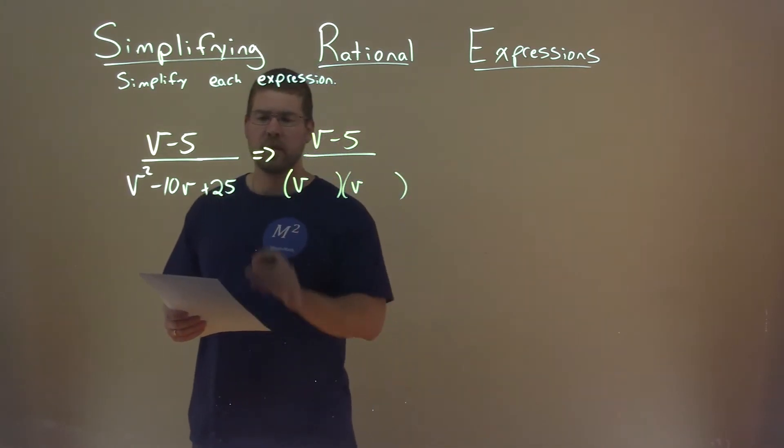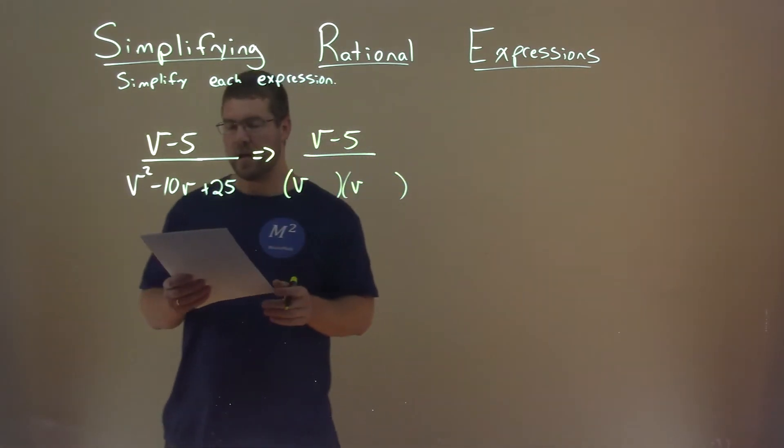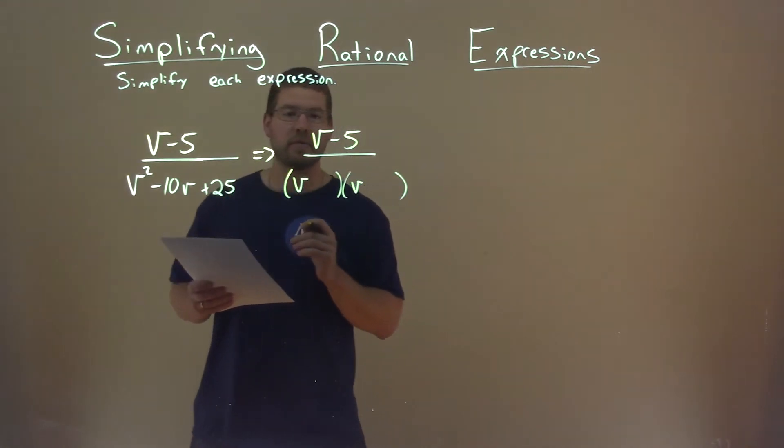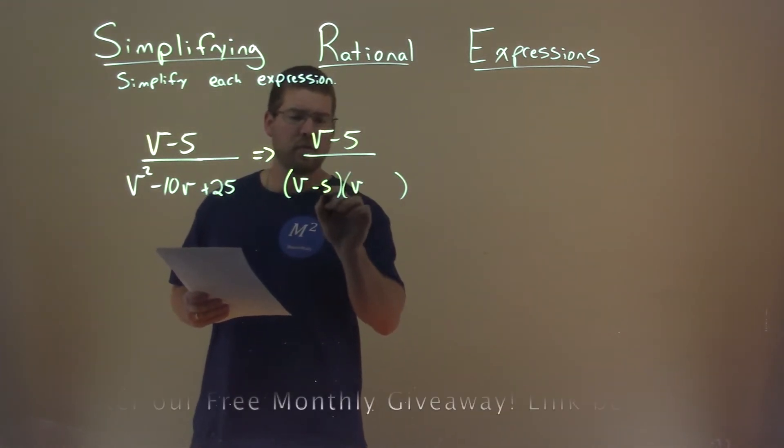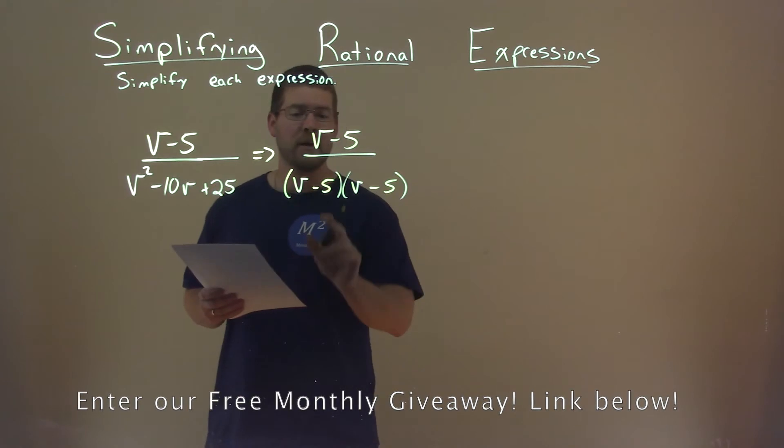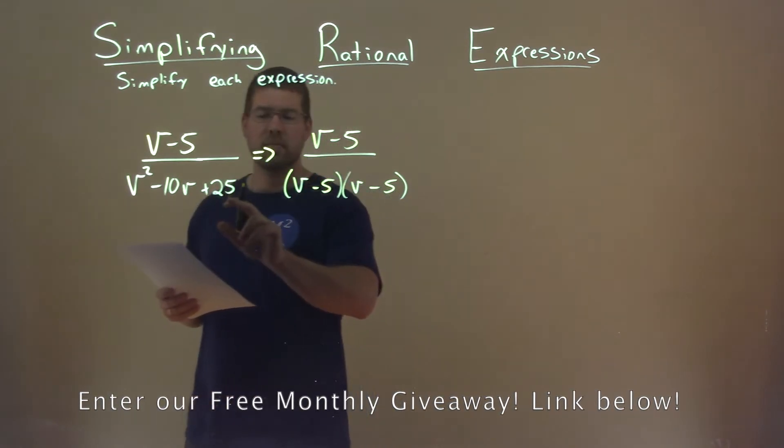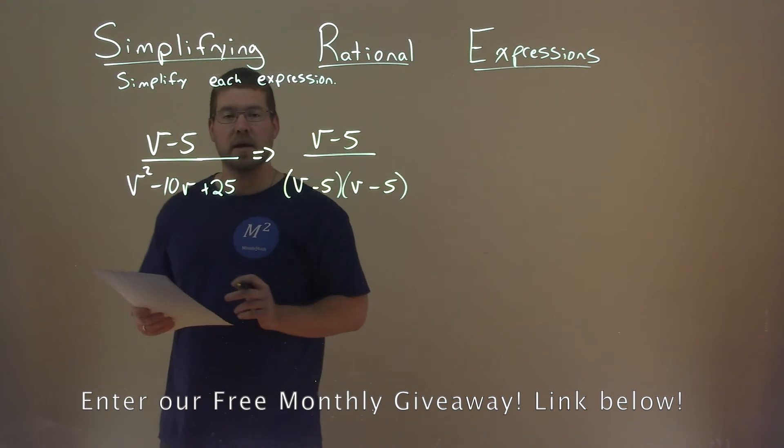So we have our form, and we ask, well, what two numbers multiply to be a positive 25 but add to be a negative 10? And that's a minus 5 and a minus 5. Minus 5 times minus 5, positive 25. We add them together, we get negative 10.